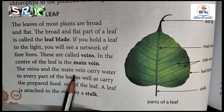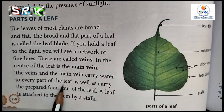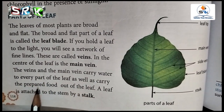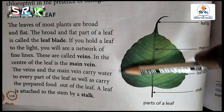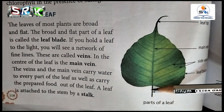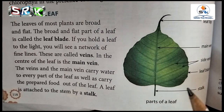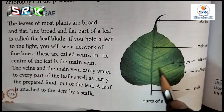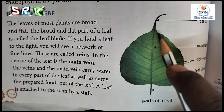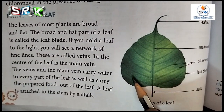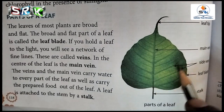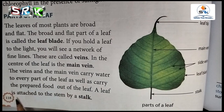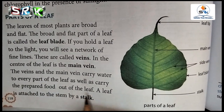The veins and the main veins carry water to every part of a leaf, as well as carry the prepared food out of the leaf. The whole leaf is attached to the stem by a stalk.